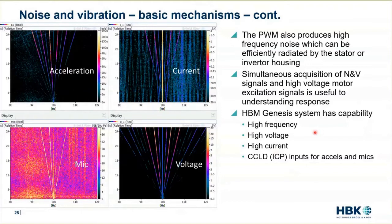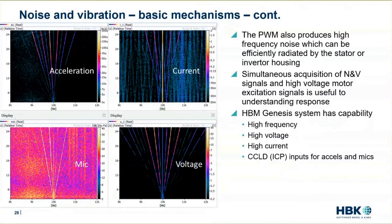This can be done with our HBM Genesis system. It is already configured to acquire voltage signals up to 1000 volts and has high-current probes, so it can capture a lot of the detail going on here. At the same time it has CCLD inputs for accelerometers and microphones. We got a little commercial there, but it's worth noting this is a unique capability product that we have.